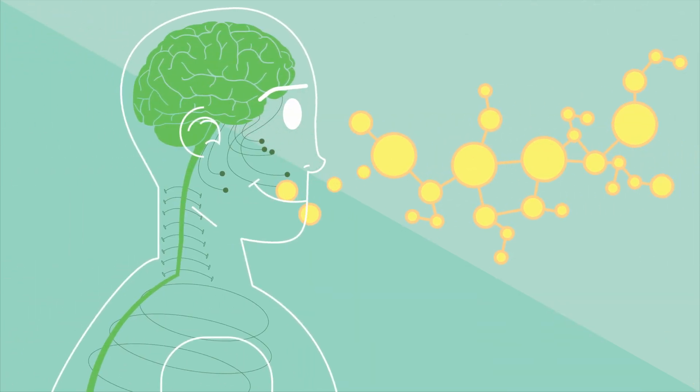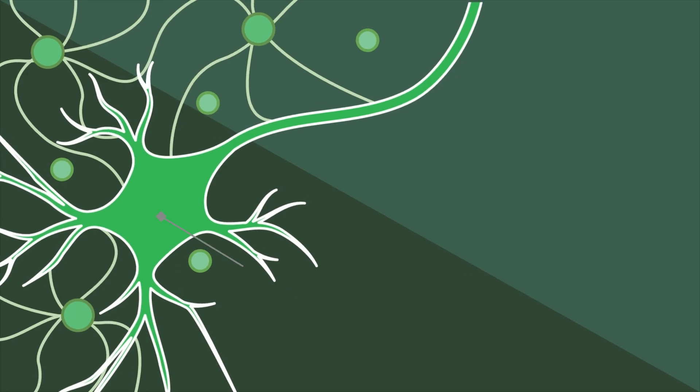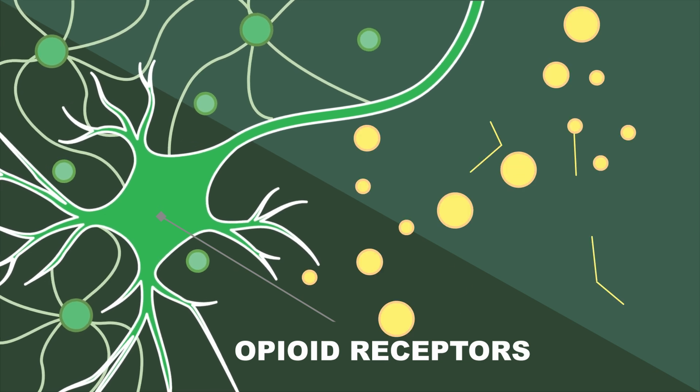Once this conversion happens, the compound travels through the bloodstream to the brain. Here, 7-OHM interacts with special proteins called opioid receptors.